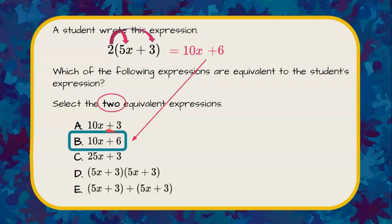Therefore, I can rule out choices A and C because there is no way 10x plus 6 can ever be equivalent to 10x plus 3 or 25x plus 3.